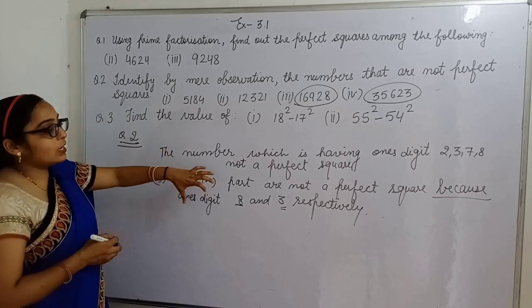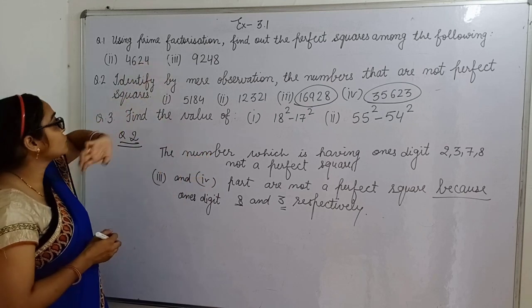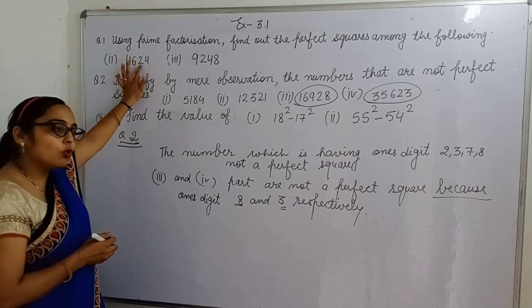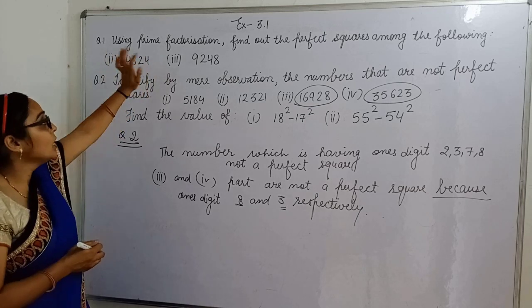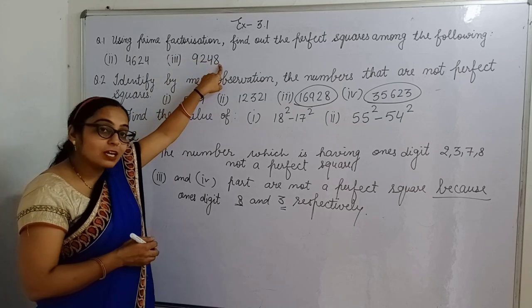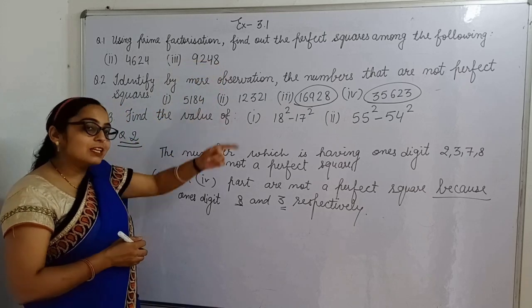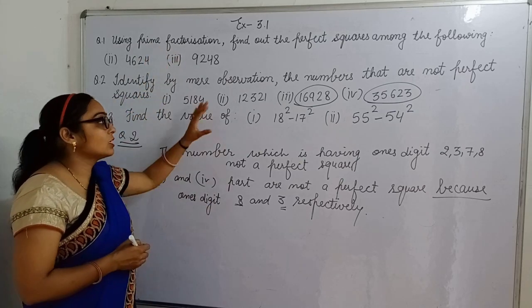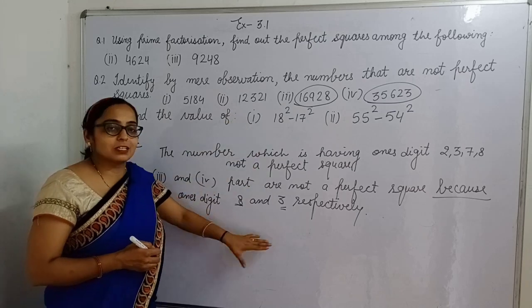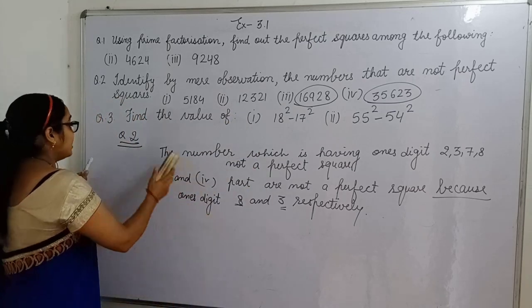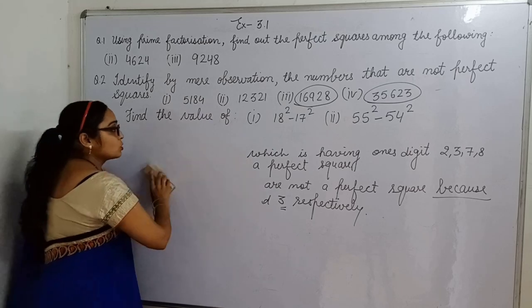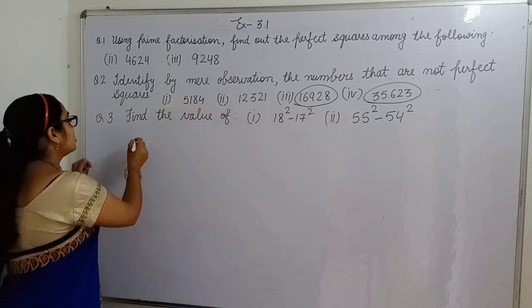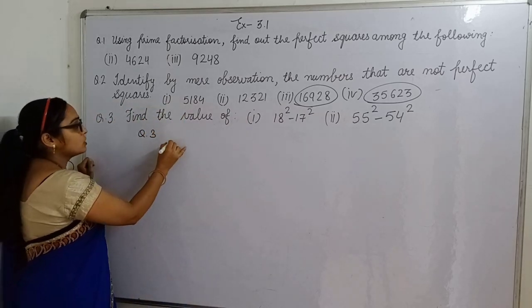By this calculation or this observation, you can find out first one also. Yahaan ke aapke paas 4, to yeh humare paas aa gaya tha, yeh ho bhi sakta aur nahi bhi, par yeh aa gaya tha humare case mein. Now 3rd part 8 hai, yeh humare paas nahi aaya tha na perfect square. To aap aise bhi pata kar sakte ho. But yahaan par prime factorization thi, isliye humein usko solve karna tha. So question 3rd, 1st part, 18² - 17².